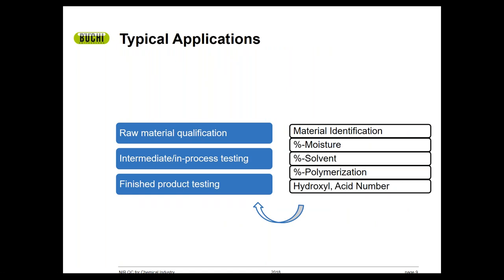Most but not all of the NIR applications include tests such as material identification, percent moisture or percent solvent determination, the extent of polymerization, hydroxyl or acid number. Those are just consistent themes across a lot, but these are not all inclusive. Now we'll take a quick look at some of the more broadly applicable examples.